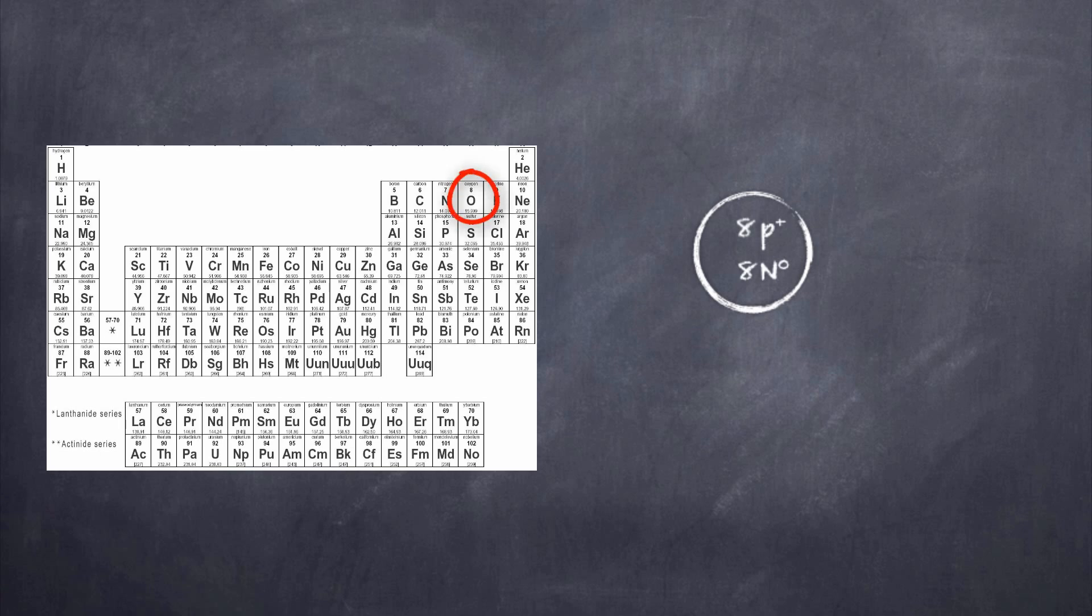So as you notice, oxygen being in the second period, we're going to draw two rings around the nucleus. And now what we're going to do is we're going to start counting the number of elements that are in each energy level or in each ring. You'll notice that in the first period there are two elements, hydrogen and helium. Those correspond to the number of electrons that we're going to draw in that first ring, two.